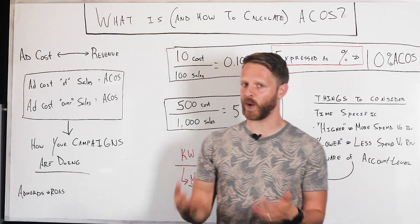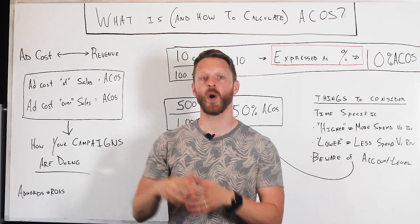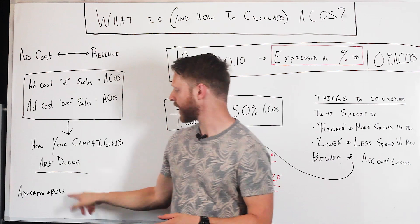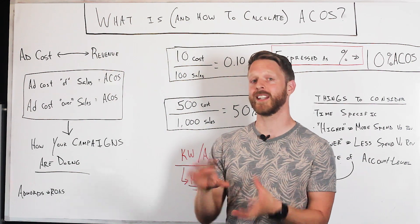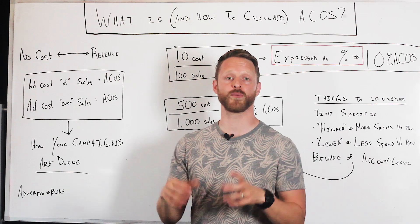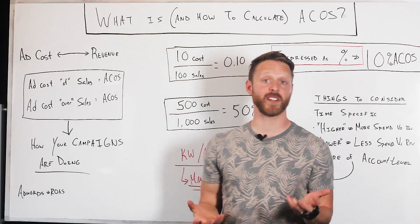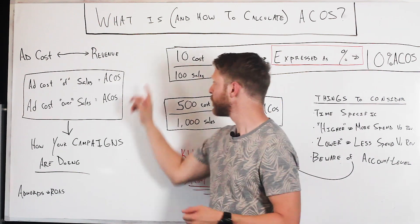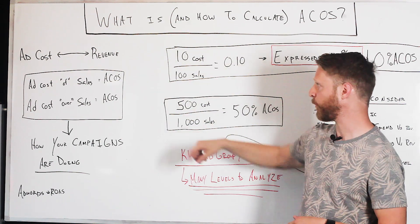ACoS really answers the question of how your campaigns, ad group, or keyword is actually doing. Quick note: in Google Ads it's actually represented inversely — they use ROAS, which is revenue over ad spend. Amazon decided to go with ad cost over sales.